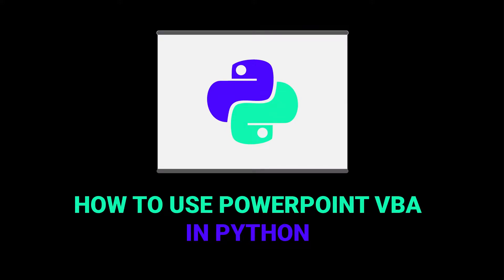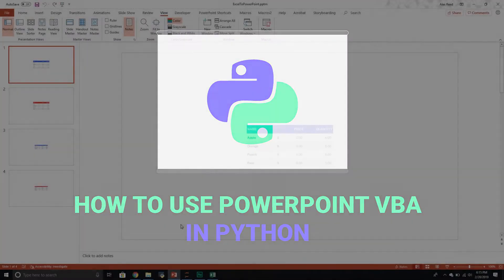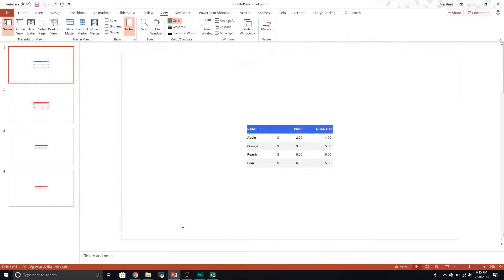Hello and welcome to another Python tutorial. This is going to be the first video where we explore the PowerPoint object model inside of Python. We're going to see how to do the basic things — how to create a reference to a PowerPoint application, a reference to a presentation, to a slide, to a collection, and how to loop through that collection.